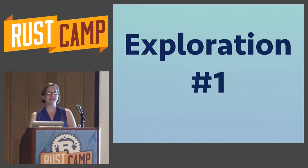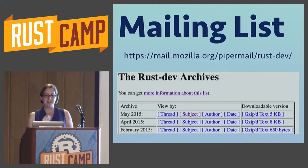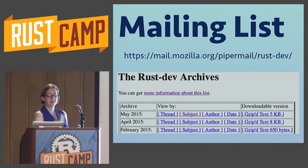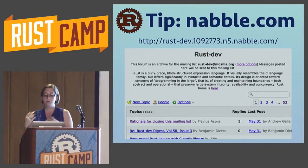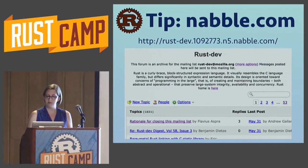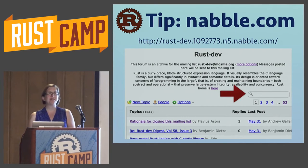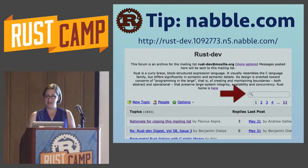Journey number one. The largest, earliest treasure trove of Rust information is the mailing list. The Rust dev mailing list through Mozilla was active from about July 2010 through January 2015, when we moved to Discourse. The first tip I have is instead of looking at this on Mozilla's site, read it on nabl.com — a site that hosts mirrors and archives of lots of different mailing lists. The reason I'd recommend this is because they have a search box, which is very helpful for finding things about a particular topic.